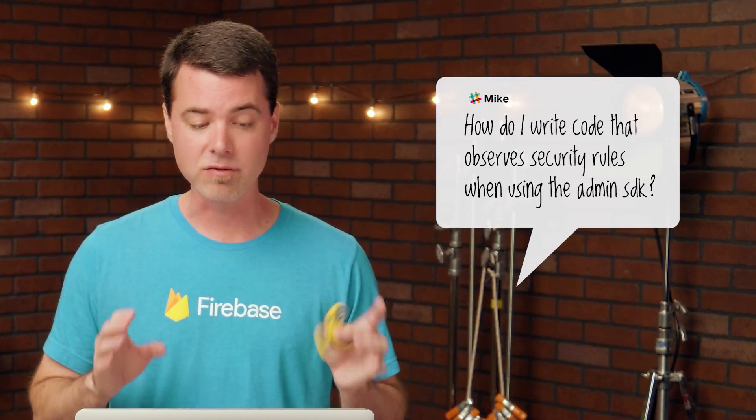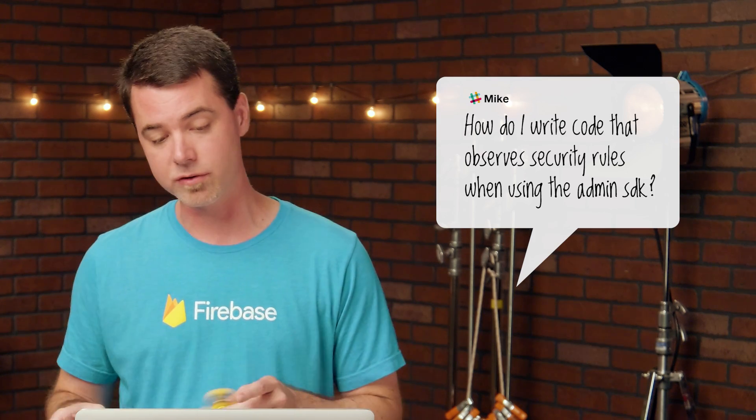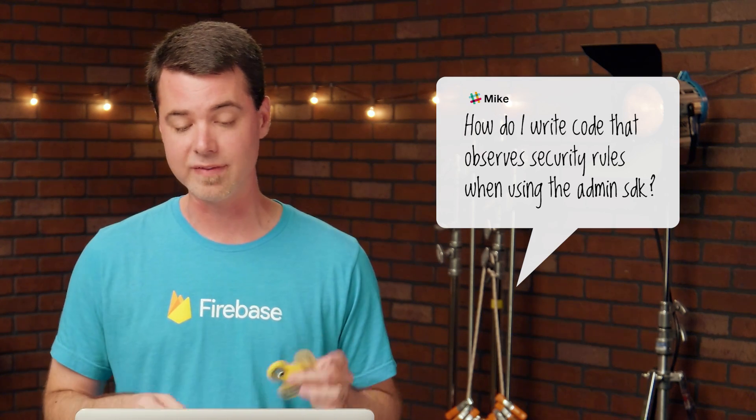This next question comes from Mike on the Firebase Slack. How do I write code that observes security rules when using the Admin SDK? Normally, when you initialize the Admin SDK, you do so with admin privileges, which means you get full read and write access throughout the database, regardless of any security rules or validation rules that might be in place. What Mike wants to do is use the Admin SDK to do writes that observe those rules.